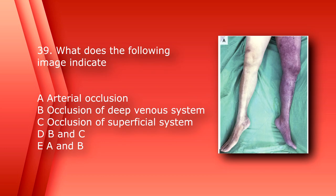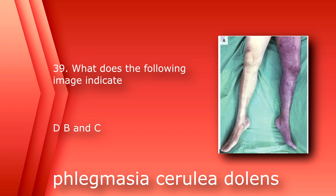Number 39: what does the following image indicate? A. Arterial occlusion, B. Occlusion of the deep venous system, C. Occlusion of the superficial system, D. B and C, or E. A and B. The answer is D, occlusion of the deep and superficial venous systems.